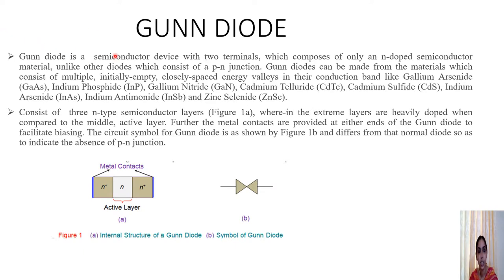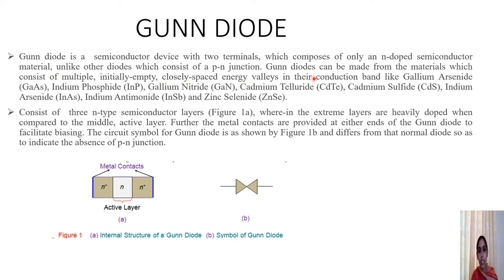The Gunn diode is composed of two terminals. Unlike a PN junction diode which has P-type and N-type material, the Gunn diode uses only N-doped semiconductor material. In the middle there is an N active layer, and on the sides are two heavily doped N⁺ regions used for metal contacts. The active layer is responsible for the device's operation. Materials used include gallium arsenide, indium phosphide, and gallium nitride — all having multiple initially empty closed-space energy values in the conduction band.